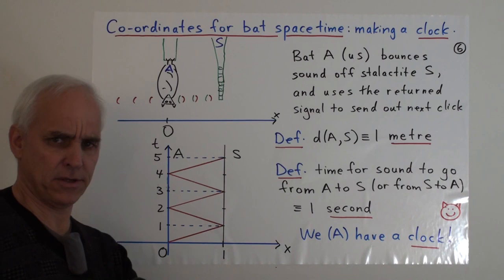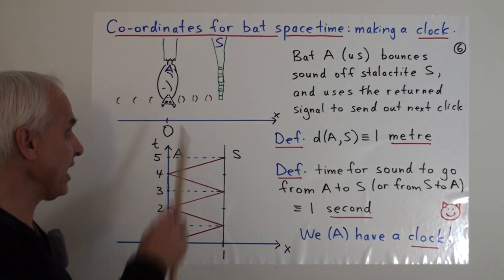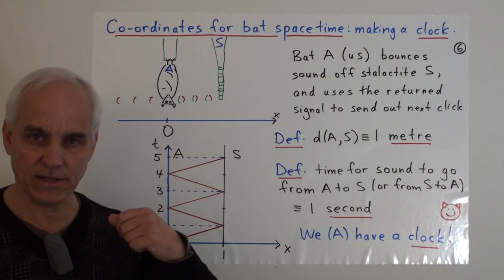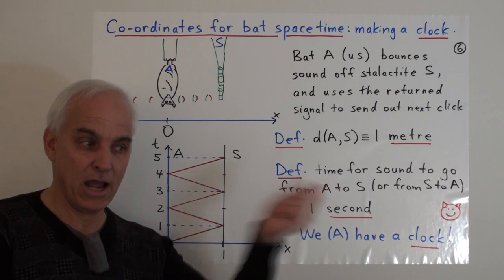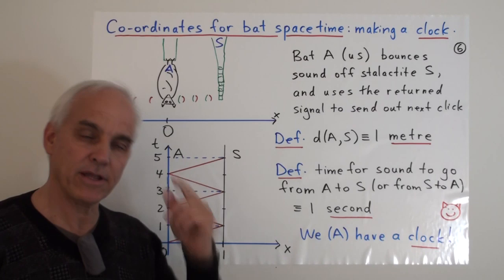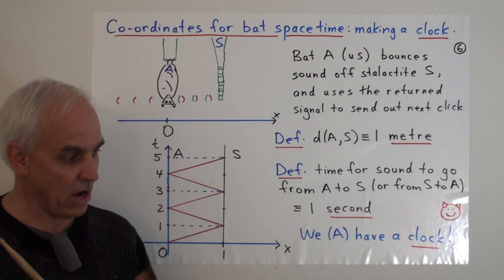So, we're going to define the time for a sound to go from A to S, from here to here, or equivalently from S to A, presumably these are the same, as one second. So, we're going to introduce a time measurement. We define a second to be the amount of time it takes for sound to go from us to the stalactite, or from the stalactite to us. We're going to assume that those are the same. Why shouldn't they be? So, we, namely bat A, now have a clock. By sending out these constant clicks to the stalactite, and just registering when they come back, sort of counting, we have an internal clock that we can use for timekeeping. And we also have the beginnings of a kind of a spatial understanding of the world around us, because we've now established a unit of length. We don't know where anything else is yet, but we can say for sure that we're at position zero, and the stalactite is one unit away, one meter away.